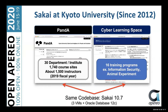One is PANDA, the other is Cyber Learning Space. PANDA is used by 1,740 regular classes by about 15,000 instructors in the 2019 fiscal year. As for CLS, it is used for compliance training programs such as information security and animal experiments. These services use the same code base, which is Sakai 10.7, and their computer resources are 3 VMs and an Oracle database.